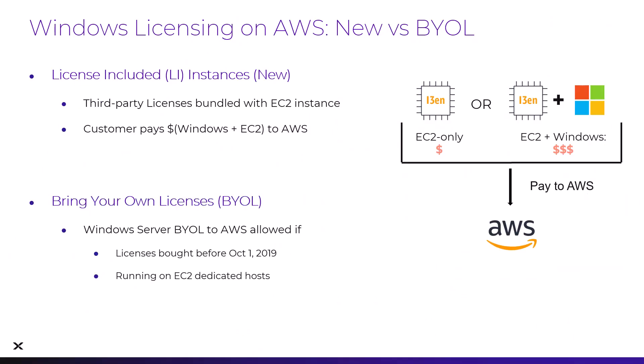The first option is licenses included, which gives us the ability to use on-demand instances that we've been using since the beginning of our NC2 with AWS deployment. You'll see an advanced setting that you'll need to select to get this option, and there will be an additional charge for Windows licensing built into the instance cost. Some customers may decide to have one cluster for Linux workloads and another for Windows workloads. You can mix and match, but it may make sense financially to separate out the different workloads.